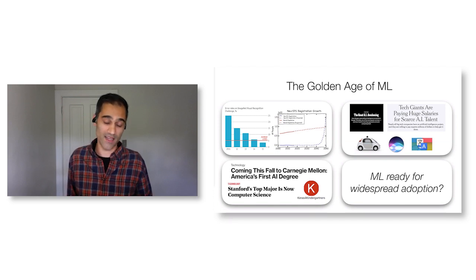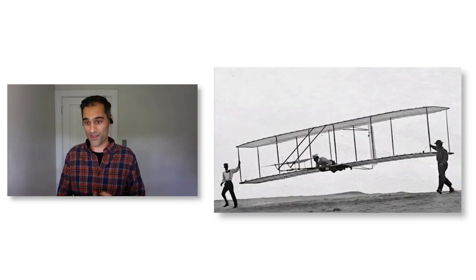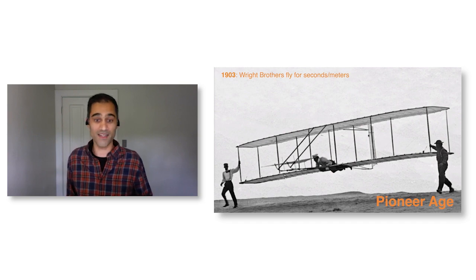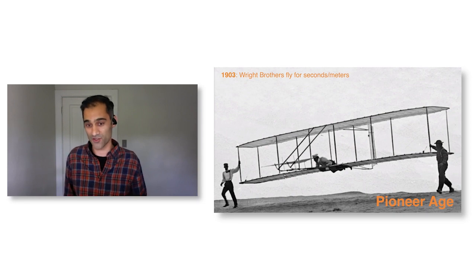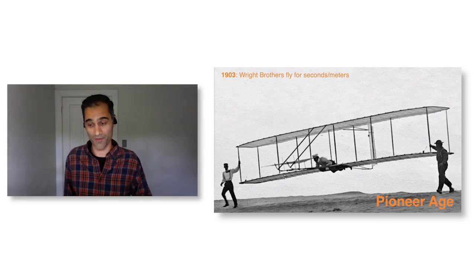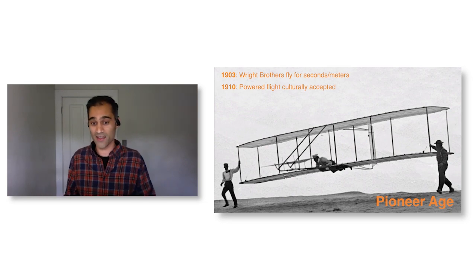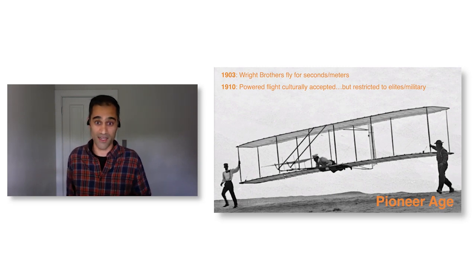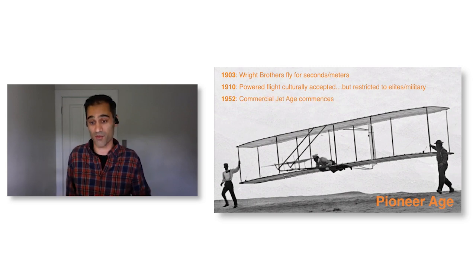To justify that answer, I think it's useful to think about an analogy with the field of aviation from about a century ago. The Wright brothers in 1903 at Kitty Hawk flew for tens of seconds and hundreds of meters, but it showed that powered flight was not science fiction—it was actually practically possible. By the 1910 World's Fair, powered flight was culturally accepted, but it was very much restricted to wealthy people or the military. It took another four decades before we reached the commercial jet age with jumbo jets and commercial airports.